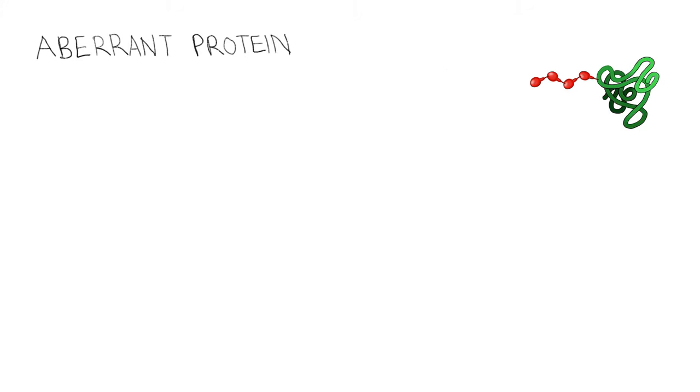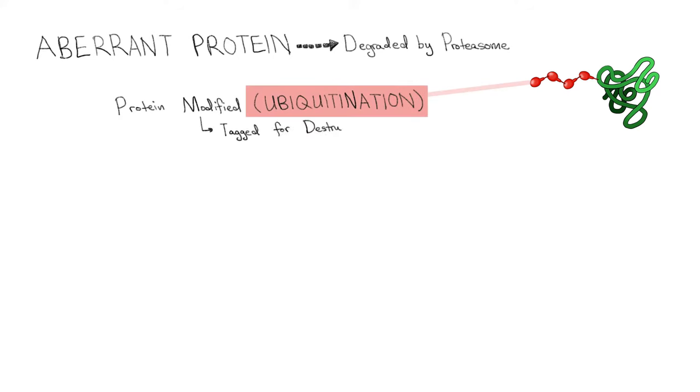An aberrant protein undergoes several steps in order to be degraded by the proteasome. To summarize and oversimplify the process, first, the protein is modified through a process called ubiquitination, which tags it for destruction.